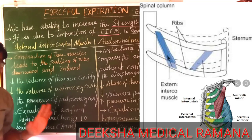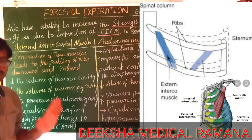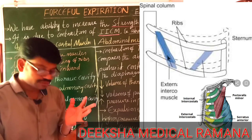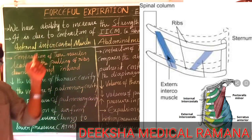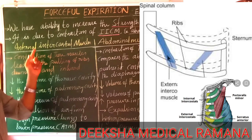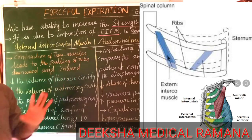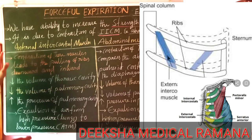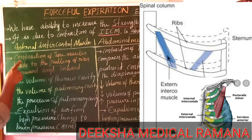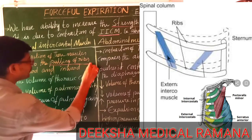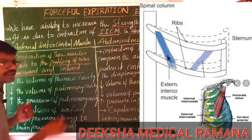Be very careful about this. During normal breathing, external intercostal muscles and the diaphragm are involved. During forceful expiration or forcible breathing, internal intercostal muscles and abdominal muscles are involved. Internal intercostal muscles are present between the ribs. When these muscles contract, it leads to pulling of the ribs downward and inward — this is very important.